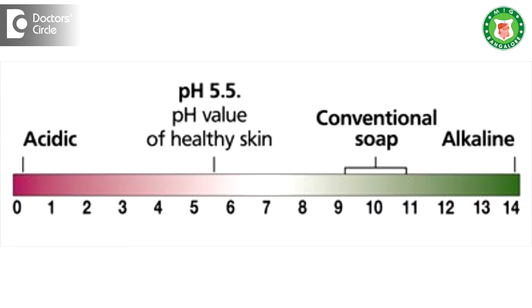Regarding bathing soaps, the pH of normal skin is 5.5 — that is slightly acidic. The neutral pH is 7. If it is less than 7, that is acidic. If it is more than 7, that is alkali. Skin basically has an acidic pH — that is the acid mantle. This layer is present in the skin with a pH of 5.5.